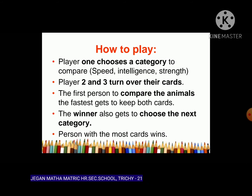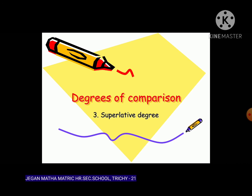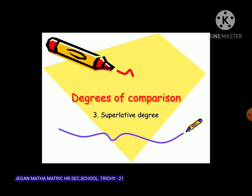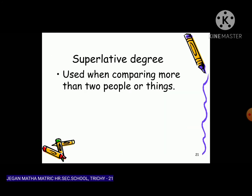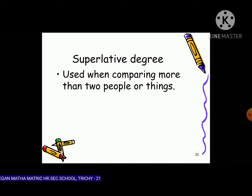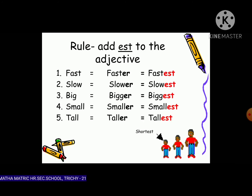The person with the most cards wins. Now, degrees of comparison — the third one: superlative degree. We have finished positive and comparative degree. The superlative degree is used when comparing more than two people or things. The rule is: add -est to the adjective.